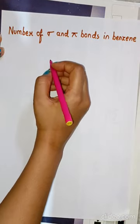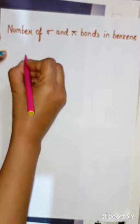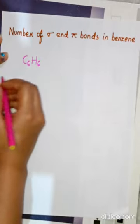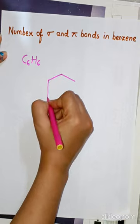In this video I'm going to discuss the number of sigma and pi bonds in benzene. Benzene has a chemical formula of C6H6. Let's draw its structure. Benzene is a six-membered ring.